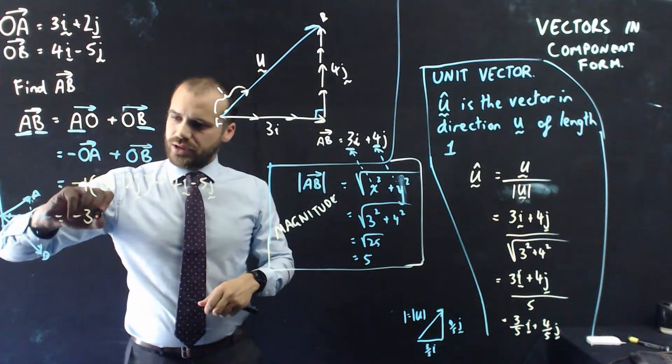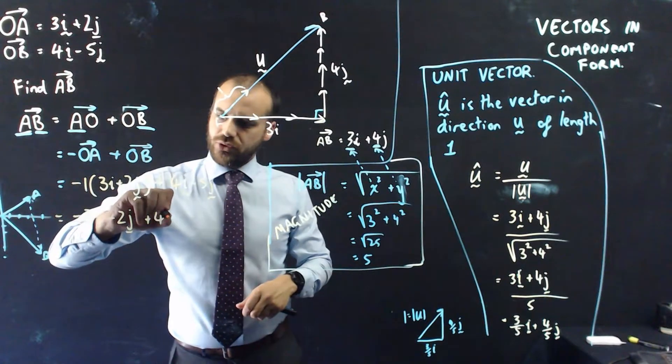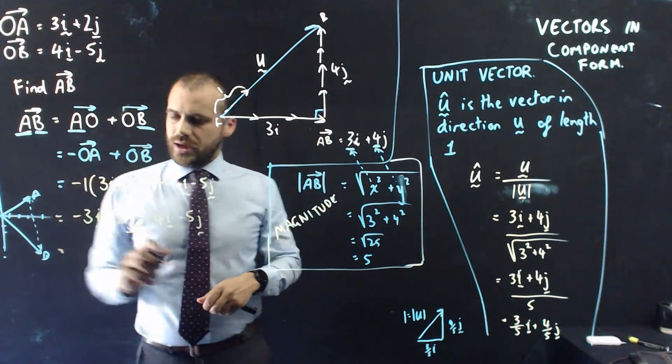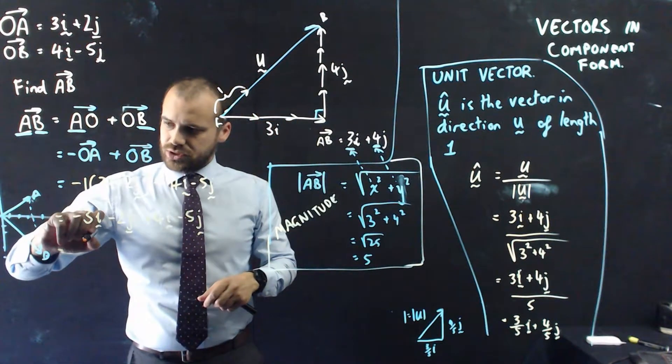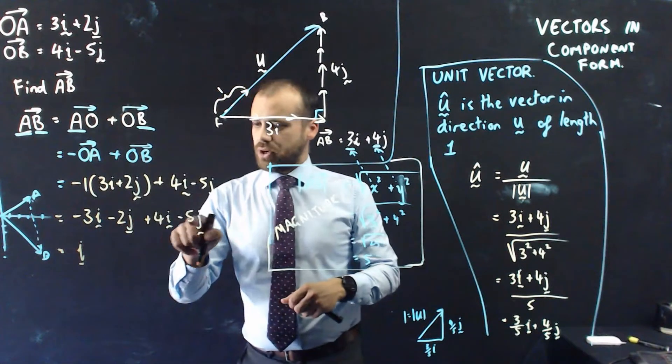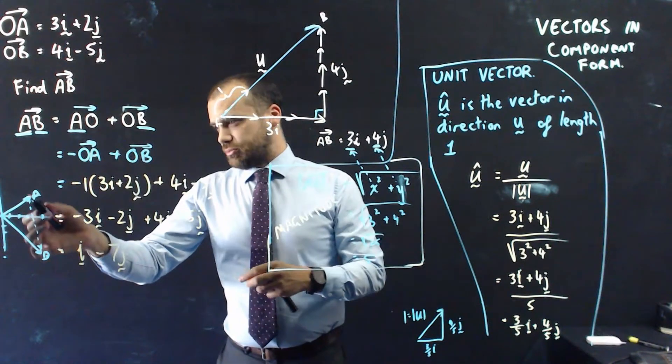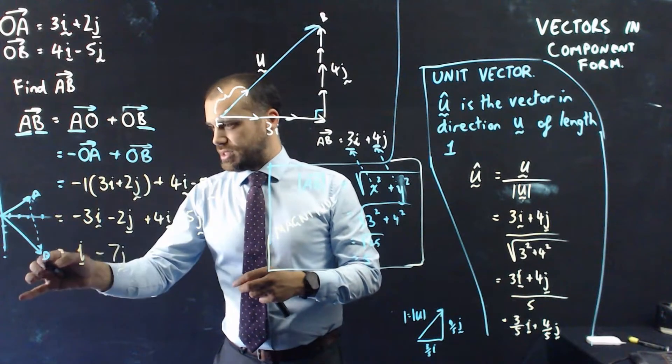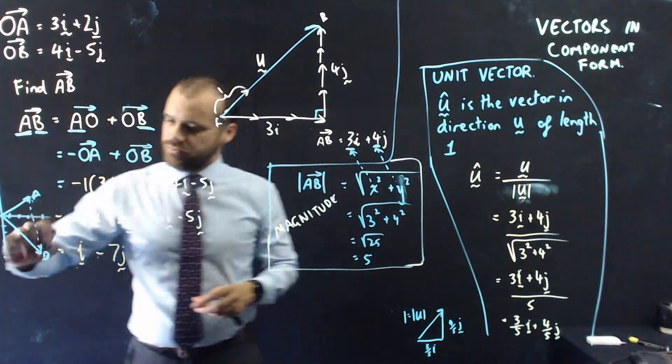All right, so I get negative 3I negative 2J plus 4I minus 5J. And I get negative 3I plus 4I. That's just I. And I get negative 2J minus 5J is negative 7J. And you can see from my image that that's what it's going to look like. It's moving 1 across and it's moving 7 down. I minus 7J. That's the new vector, vector AB.